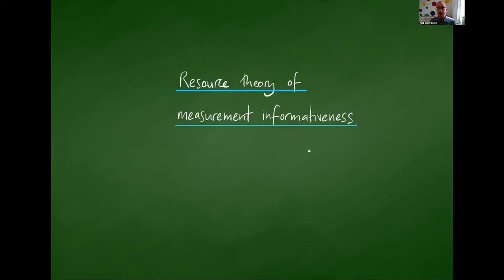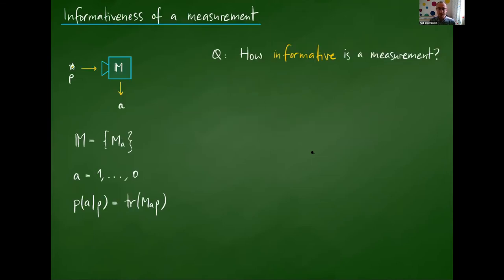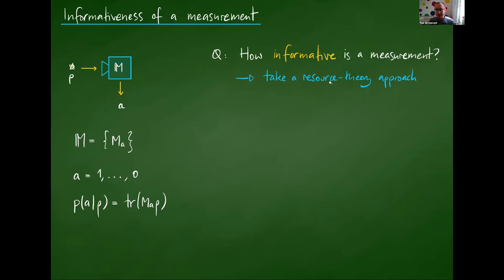Let's start with the resource theory of measurement informativeness. The basic question — one of the simplest questions you can ask about measurements — is: if I have a measuring device, formally specified by a collection of POVMs (I'll assume a destructive measurement, so I don't care about the post-measurement state), with some number of outcomes giving me probabilities according to the Born rule, how much is that measurement telling me about the quantum state which I'm measuring?